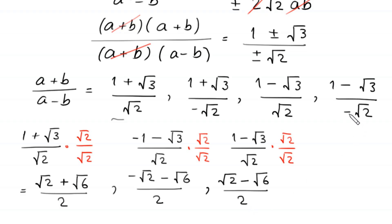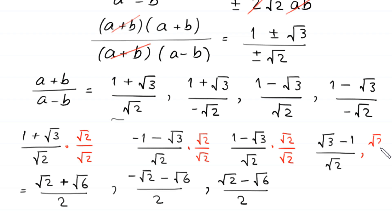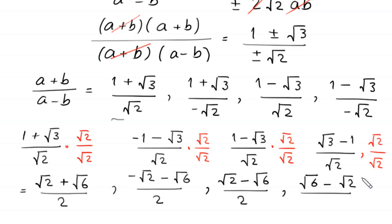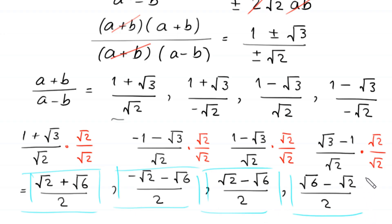For the third and fourth expressions, due to the negative sign on root 3, we get root 3 minus 1 divided by root 2; rationalizing gives root 6 minus root 2, all divided by 2. And the fourth becomes negative root 6 plus root 2, all divided by 2. So we get four solutions for (a plus b) over (a minus b).